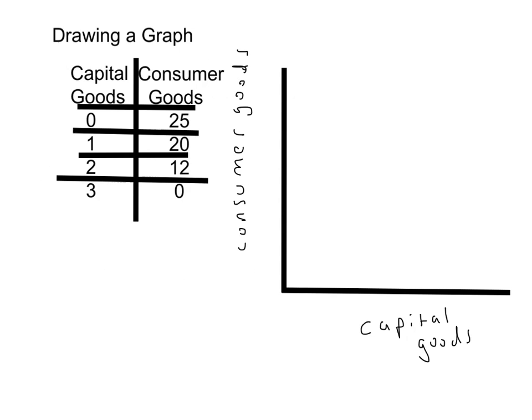When drawing a production possibility curve, you have to put labels on your axes. It does not matter which good goes where. For now, I'm just going to put capital goods on the x-axis and consumer goods on the y-axis. The origin is labeled here as zero, zero, with increasing numbers up and to the right.